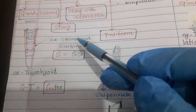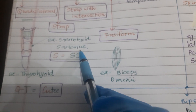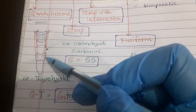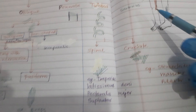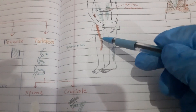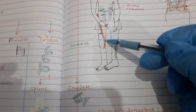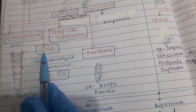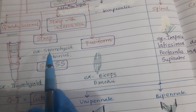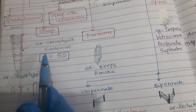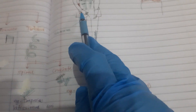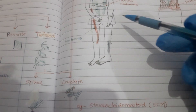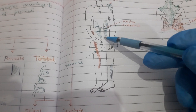For the strap variety, the examples are sternohyoid and sartorius. Sternohyoid lies between the sternum and the hyoid bone — it is strap-like, shown in brown color. Sartorius, also in brown color, runs from the anterior superior iliac spine to the medial surface of the tibia. Sartorius is the tailor muscle — S for strap and S for sartorius. The strap can also be found around a dog's neck, and sternohyoid is the neck muscle.